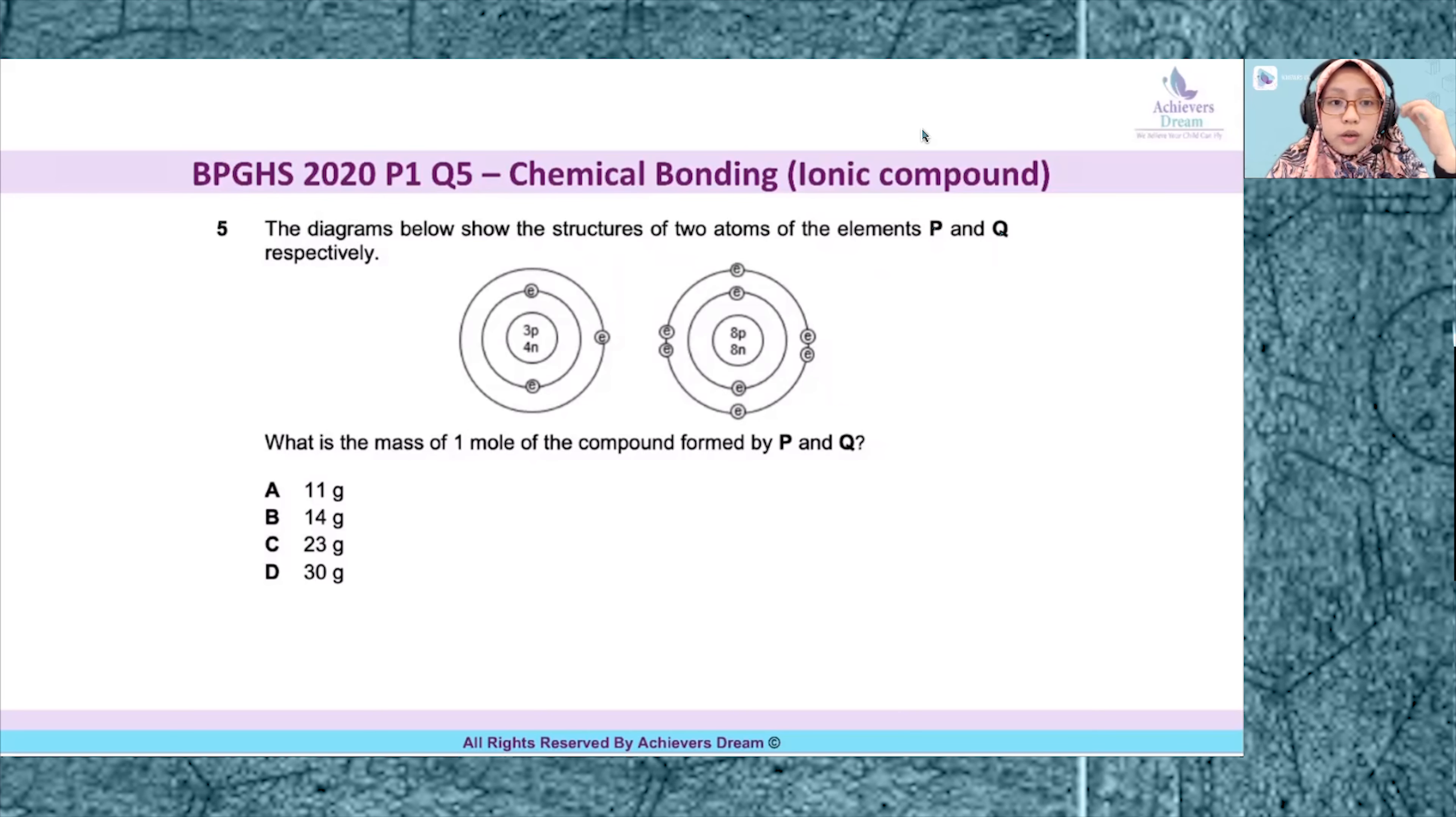Question 5 is actually testing students on the topic of chemical bonding, but there is also a bit of atomic structure knowledge required here. So if you are going to attempt a question on chemical bonding, of course you need to have the knowledge on atomic structure.